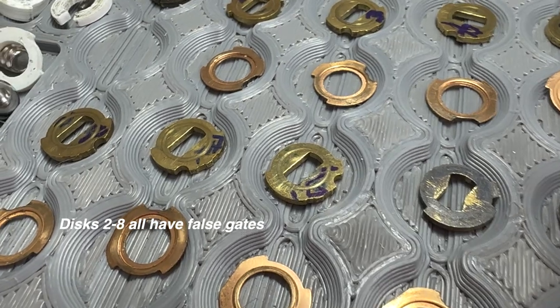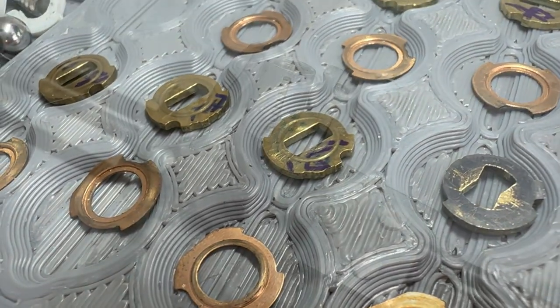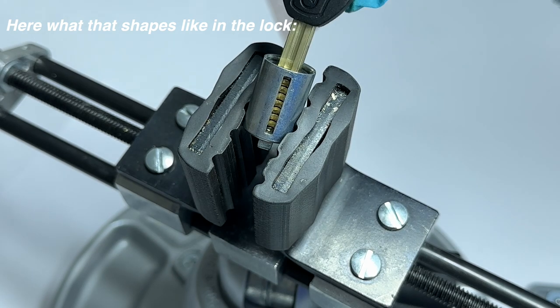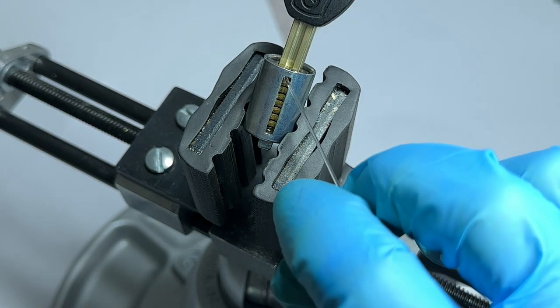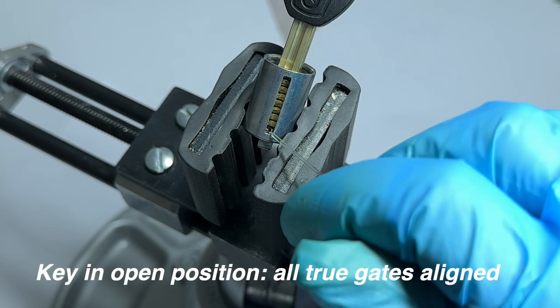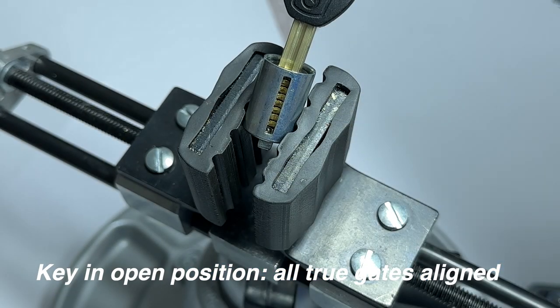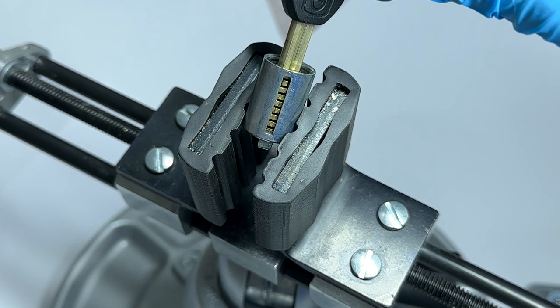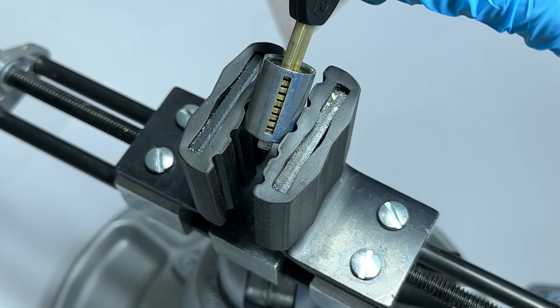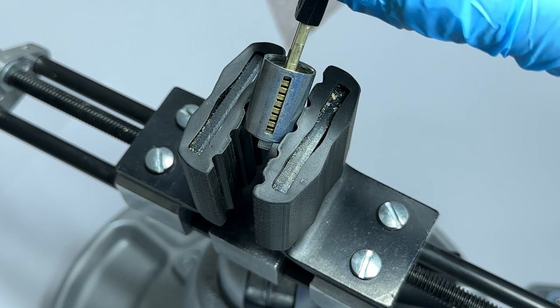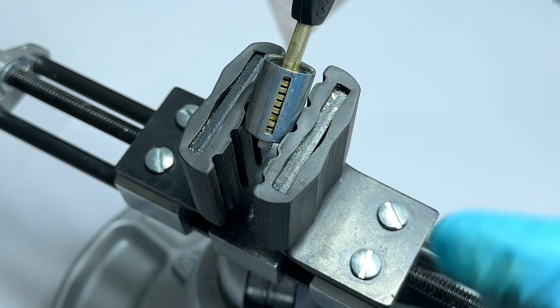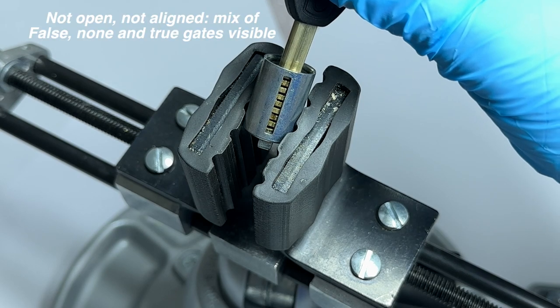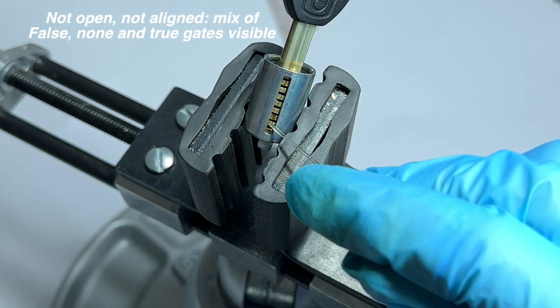This is a look at the disks, and you can see that all of them, except for the butterfly disks, have false gates. So when you're setting it, that's what it looks like when it is set. All the big true gates are all lined up. That's the win-win part. But as you go through, you'll see some shallower gates showing up and some no-gate areas showing up as you turn the key. And so that keeps the sidebar from falling into that slot and letting you turn the actuator of the lock.